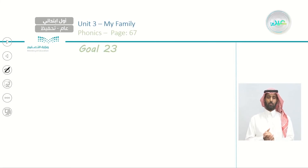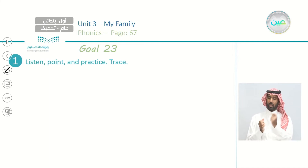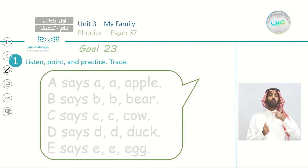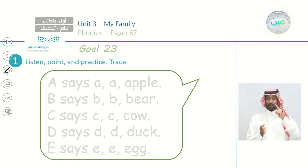Now on page 67, turn to page 67. We have goal 23, number one: listen, point, and practice trace. A says A — apple. B says B — bear. C says K — cow. D says D — duck. E says the sound — egg.